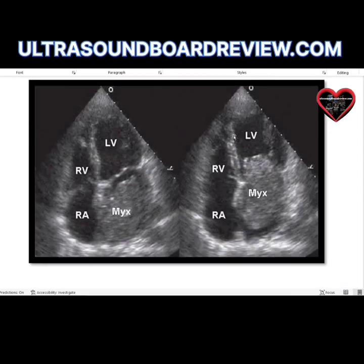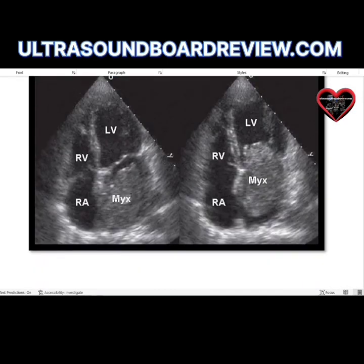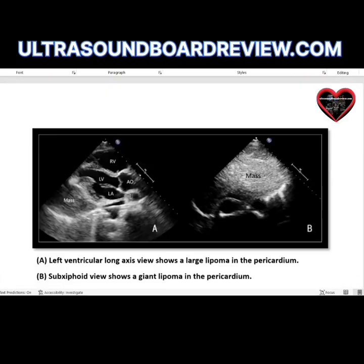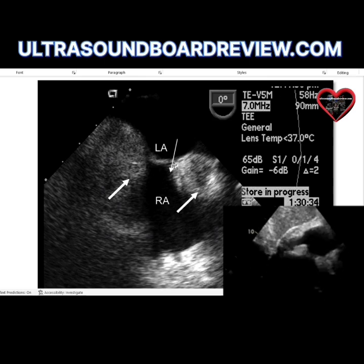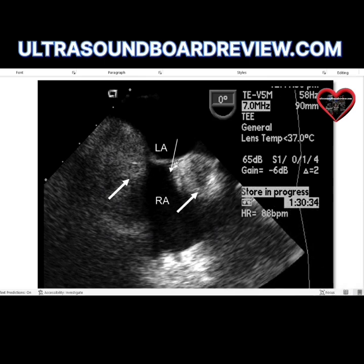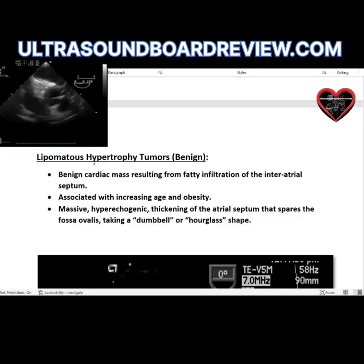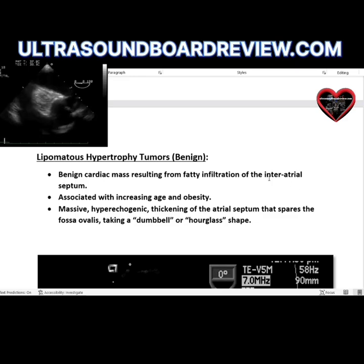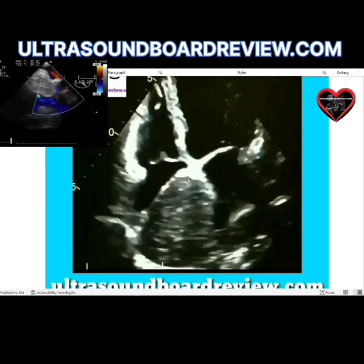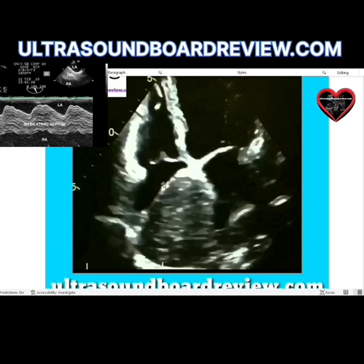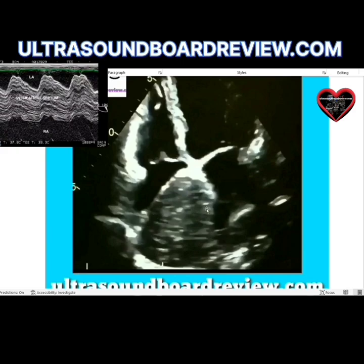The next type of benign tumor is lipomatous hypertrophy. These tumors are usually found in the interatrial septum and have a characteristic dumbbell or hourglass shape. Here you can see a lipoma that has invaded the interatrial septum — note how thick that area is. The chambers visible are the right atrium, right ventricle, left ventricle, and left atrium, with the lipoma in the interatrial septum.